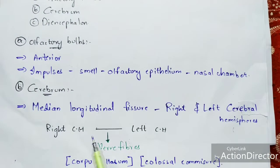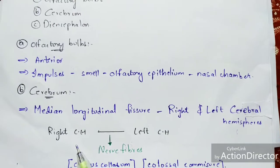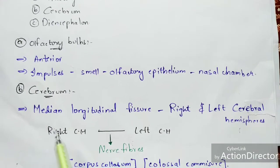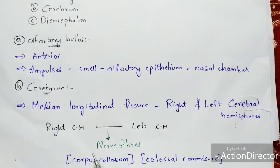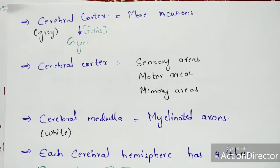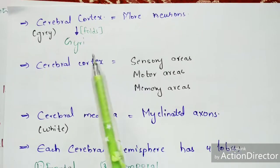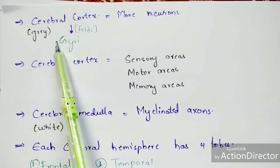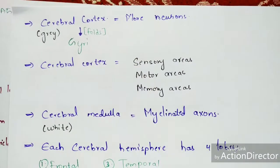The corpus callosum consists of myelin sheath nerve fibers, which play a major role in connecting the right and left cerebral hemispheres. The cerebrum consists of gray matter as well as white matter. When gray matter is layered on the cerebrum, that layer is called the cerebral cortex, which is gray in color.